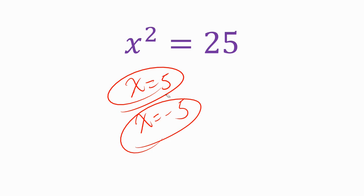Remember our shortcut — if they're the same number, we could just write x equals positive or negative 5.